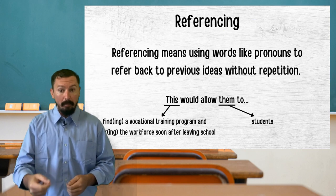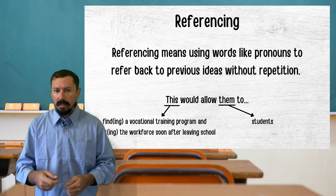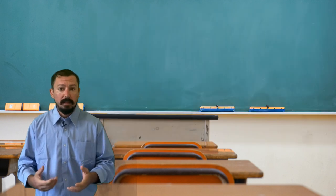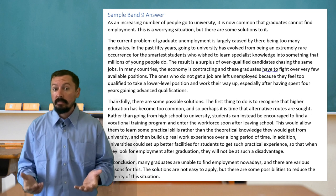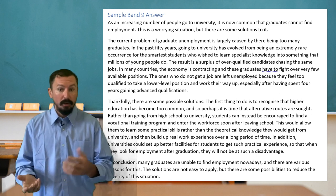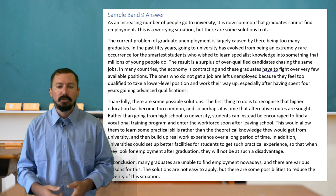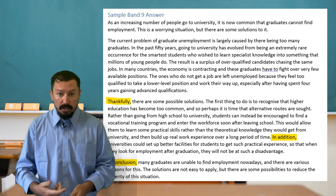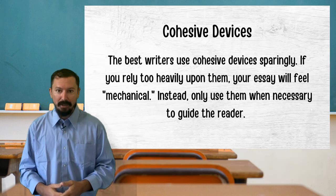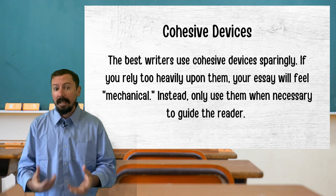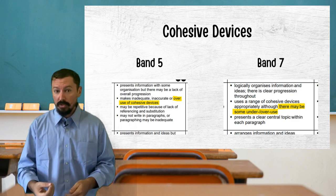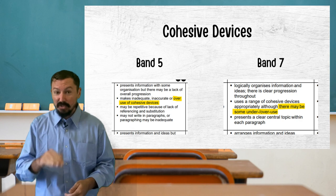I say 'this would allow them.' Many people forget that the use of words like 'this' and 'them' is essential for a good coherence and cohesion score. Finally, I would ask you to look at my essay and tell me how many cohesive devices I've used. How many sentences begin with those classic IELTS phrases — 'on the one hand,' 'on the other hand,' 'for example,' and so on? I would argue that 'in addition' and 'in conclusion' are the only ones I've used. That's because an essay that intuitively guides its reader is better than one that uses many, many cohesive devices.